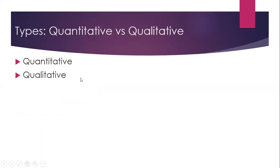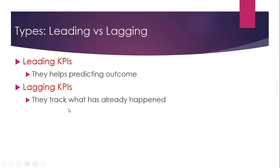Then, quantitative versus qualitative KPI. As the name suggests, quantitative KPI has a quantitative value, whereas qualitative KPI has a qualitative value. Then, leading KPI and lagging KPI: leading KPI helps predict outcomes, whereas lagging KPI tracks what has already happened.